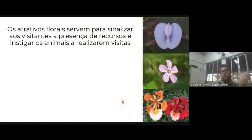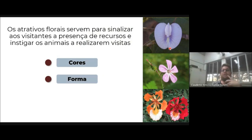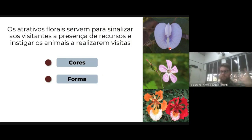Dentre os atrativos florais, são atrativos que vão sinalizar para esses insetos a presença de algum tipo de recurso, estimulando e fazendo com que esse inseto visite essa flor. A gente vai ter as cores das flores, as mais diferentes cores; a forma da flor, que muitas das vezes existem algumas espécies que mimetizam o formato de algum tipo de inseto — por exemplo, uma orquídea em que ela mimetiza um macho ou uma fêmea de uma espécie de abelha, e automaticamente esse inseto vai até essa flor pensando que é um indivíduo para realizar a cópula e acaba polinizando essa flor.